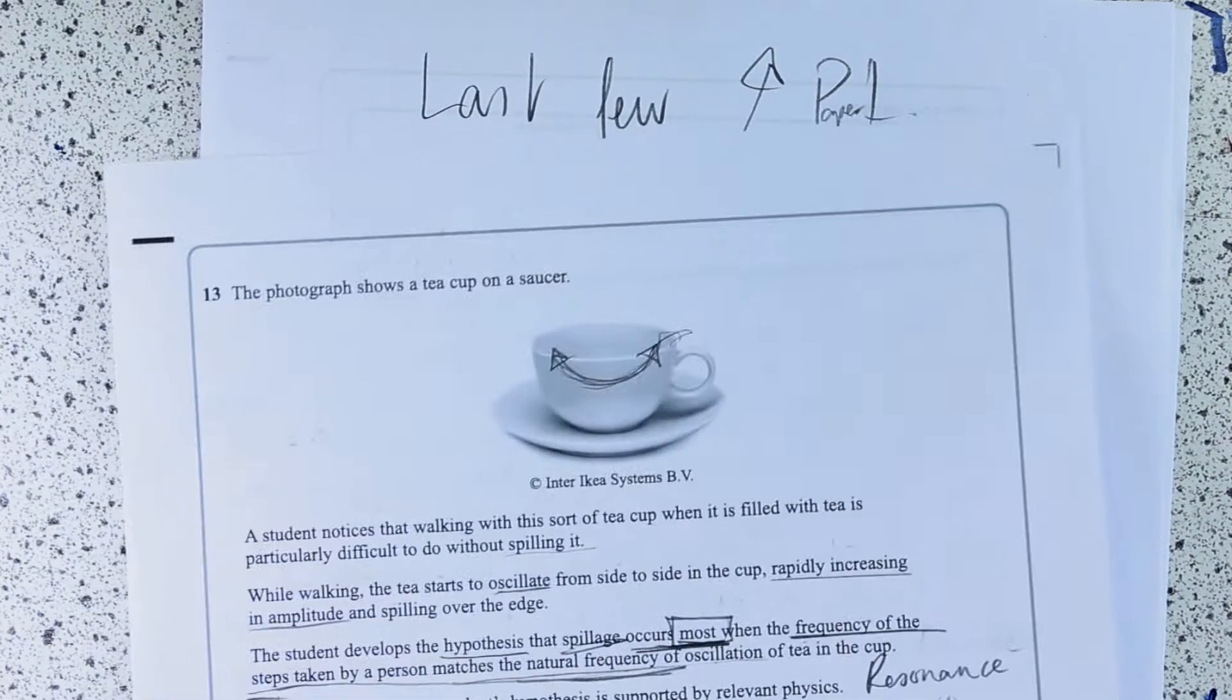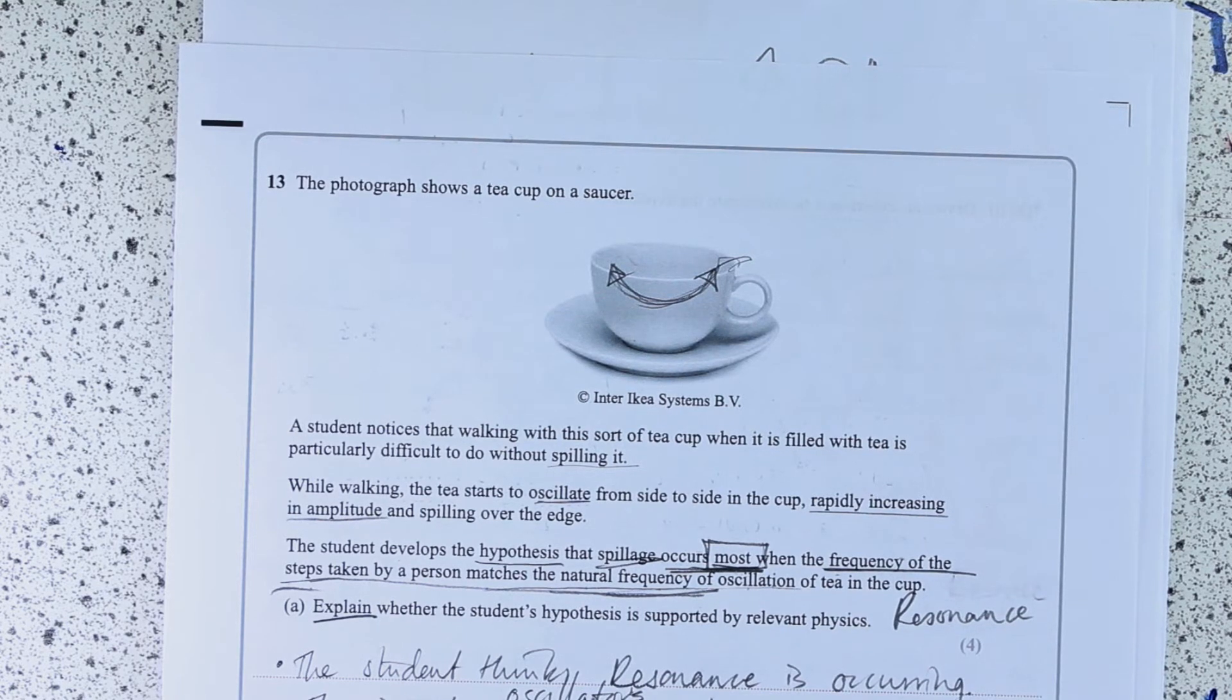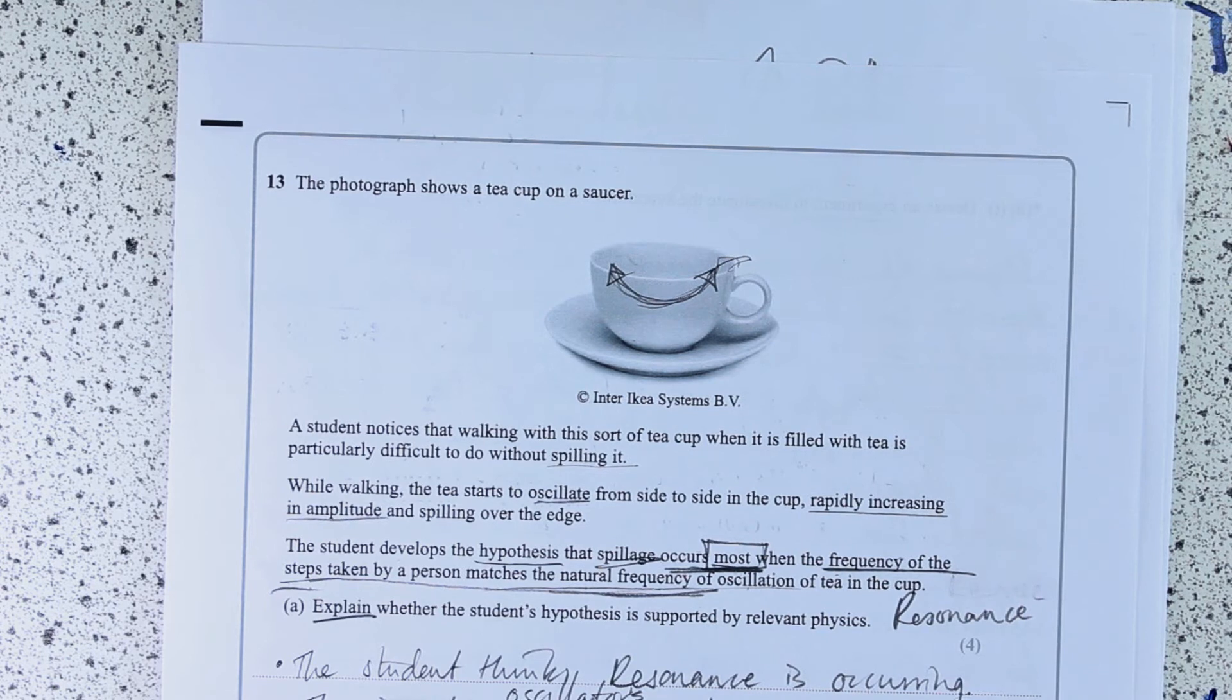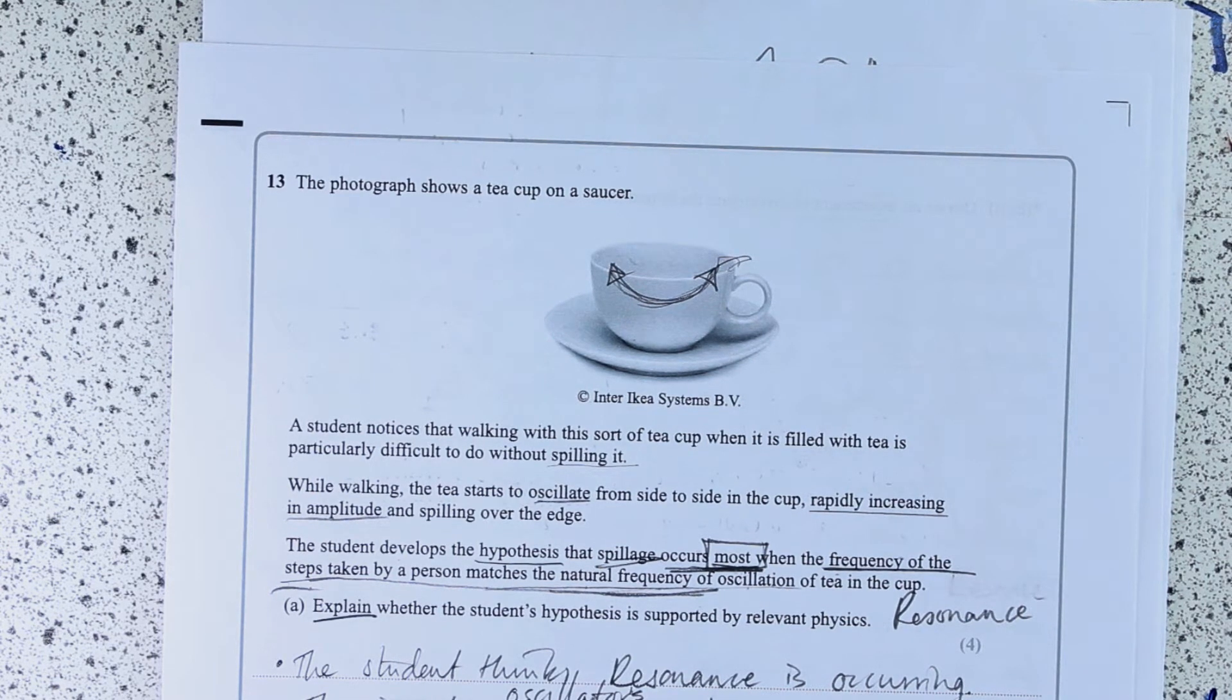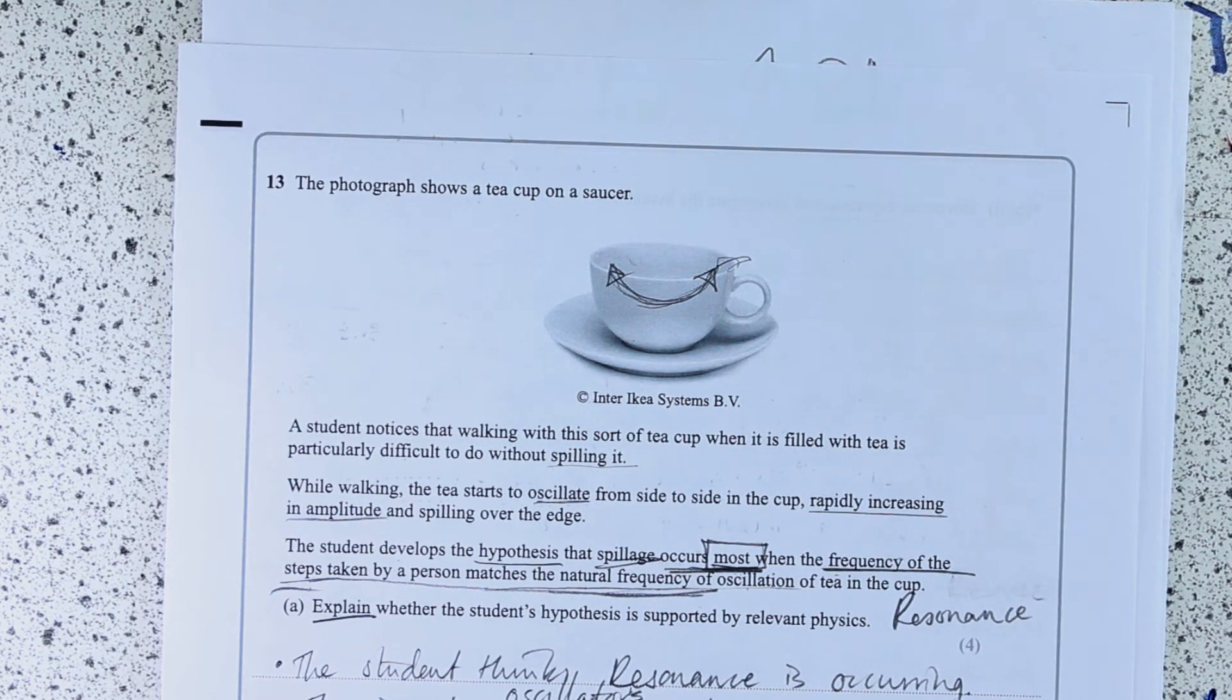I was thinking when I first read it, I was thinking, well, actually, I wouldn't use that as being my apparatus. Maybe I'd do something with maybe a vibration generator and a metal plate and I'd get the teacup so I could actually measure the frequency more precisely and I could keep it the same a bit better than a person walking.